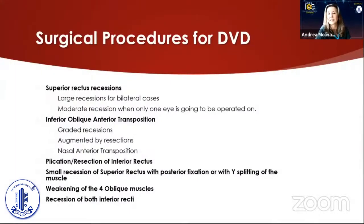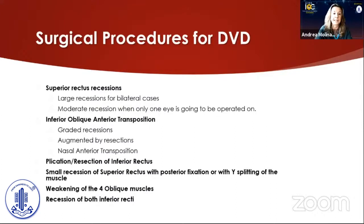As you can see, there have been many surgical procedures described for treating this disease, which reflects the fact that none is completely satisfactory. Among them: superior rectus recessions — large recessions for bilateral cases, moderate recessions when only one eye is to be operated on — inferior oblique anterior transpositions, which can be done with graded recessions augmented by resections, nasal anterior transposition, plications or resection of the inferior rectus, and small recession of superior rectus with posterior fixation or with wide splitting of the muscle.